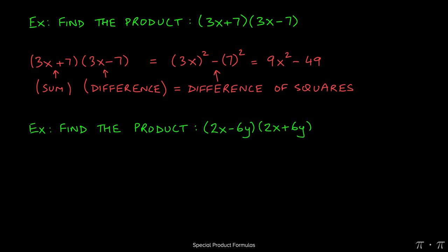Let's try another one that's similar. Let's say we're asked to find the product of 2x minus 6y and 2x plus 6y. Here you'll notice that the difference is first and then the sum is second, but the commutative property of multiplication tells us that this is not a problem.